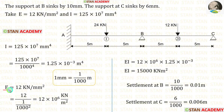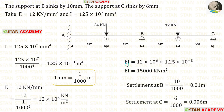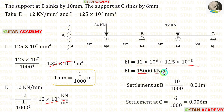Young's modulus E is given as 12 kN/mm². We need to convert this to kN/m². Since we have mm², we divide by 1000². When we do that, we get E in kN/m². For convenience, let us multiply the moment of inertia and Young's modulus together. When we do that, we get EI = 15,000 kN·m².